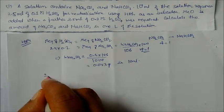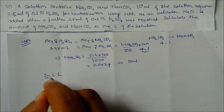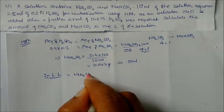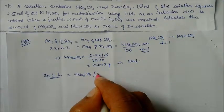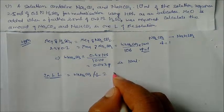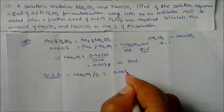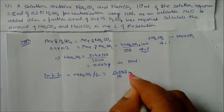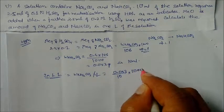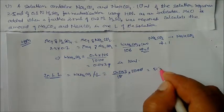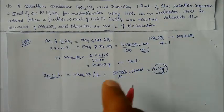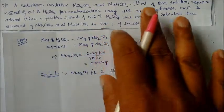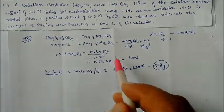In one liter: weight of Na₂CO₃ = (0.053 / 10) × 1000 = 5.3 grams per liter. Now we need to find the weight of sodium bicarbonate using the methyl orange end point.